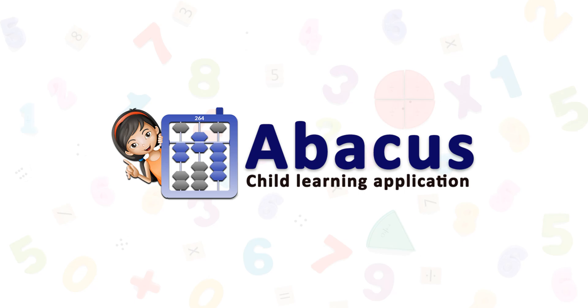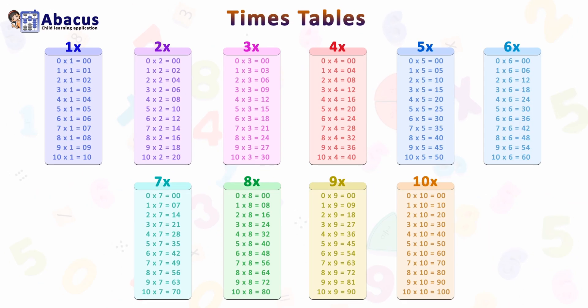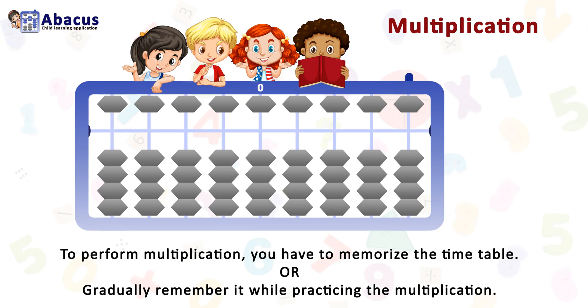Welcome to our channel. This is the Abacus Jai learning application. In this video, we see an example of two-by-two digit multiplication. Here are times tables from one to ten. To perform multiplication, you have to memorize the times table or gradually remember it while practicing.